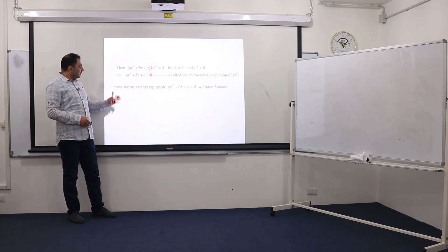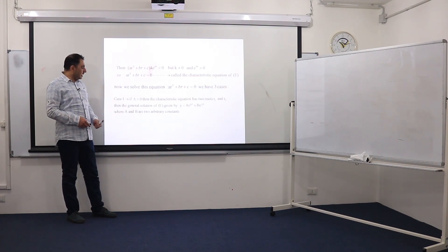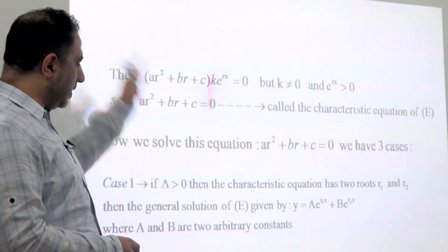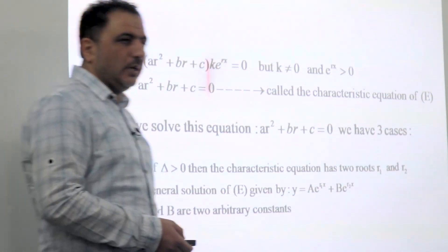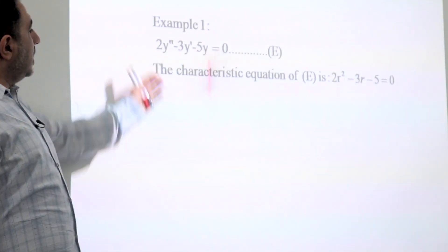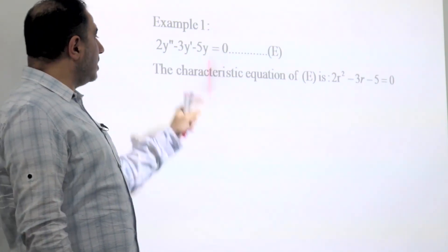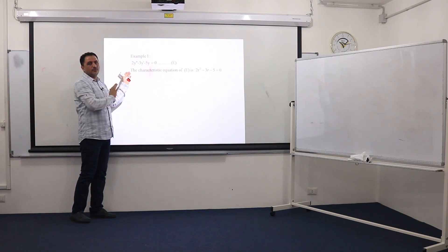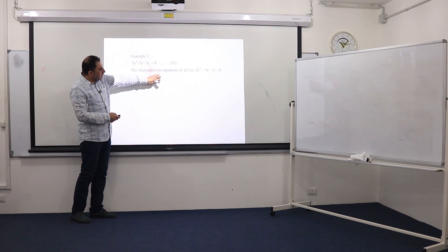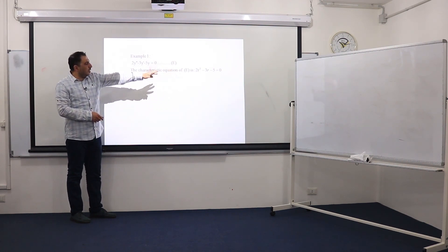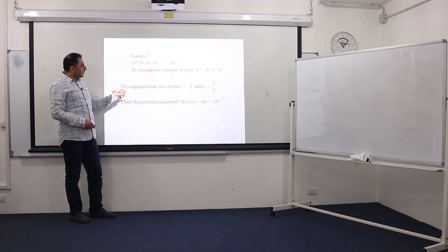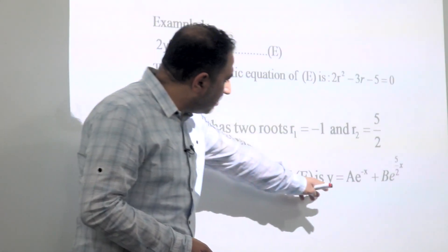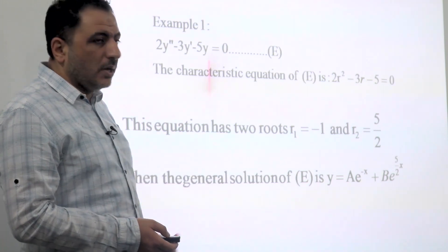To solve the characteristic equation we obtain three different cases. Case 1: if delta is positive, the characteristic equation has two real roots r1 and r2, and the general solution of the differential equation is y = Ae^(r1·x) + Be^(r2·x). Example: 2y'' - 3y' - 5y = 0. The characteristic equation is 2r² - 3r - 5 = 0, which gives roots r1 = -1 and r2 = 5/2. So the general solution is y = Ae^(-x) + Be^(5x/2), where A and B are arbitrary constants.